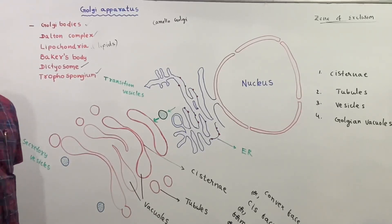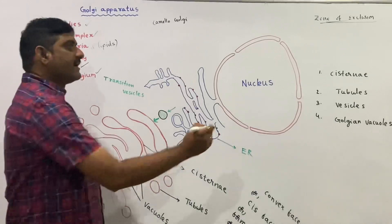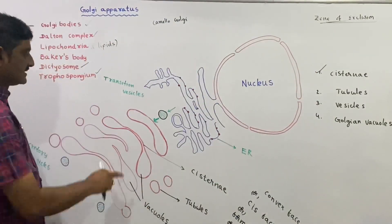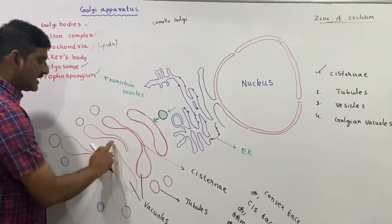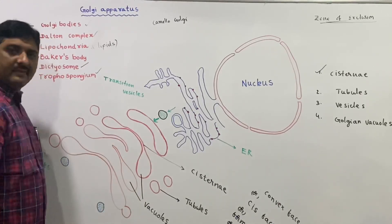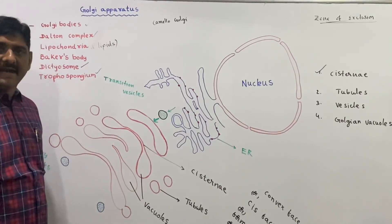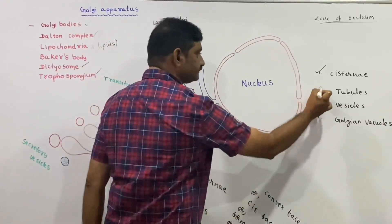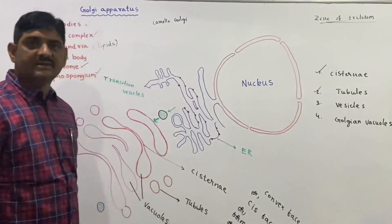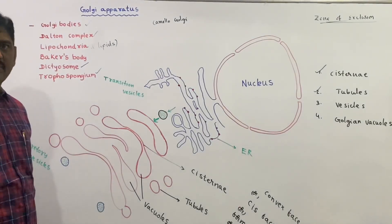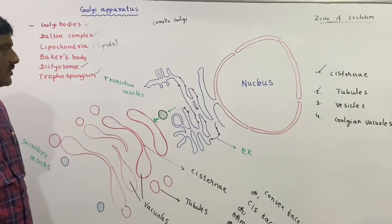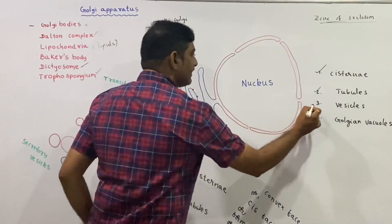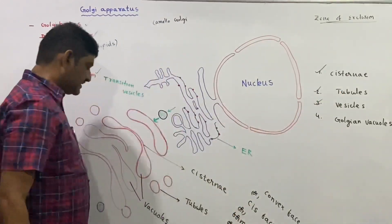The Golgi apparatus has four components. The first one is cisternae — these are sac-like, slightly curved, parallelly arranged structures. The second one is tubules — tubules are branched, tube-like extensions.